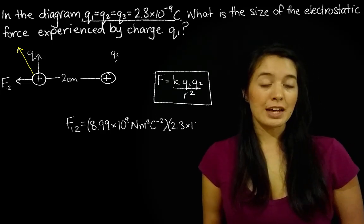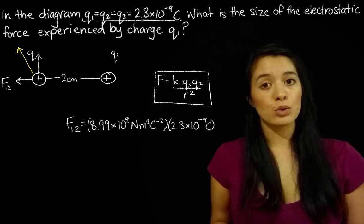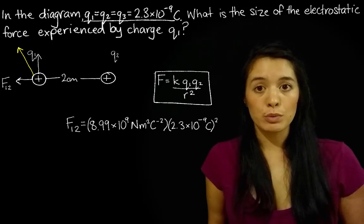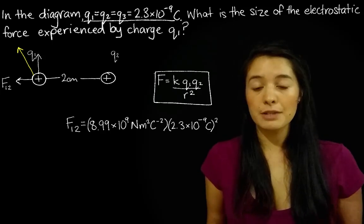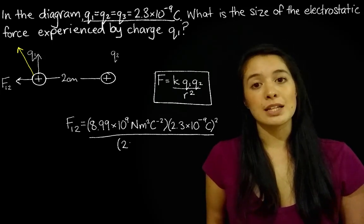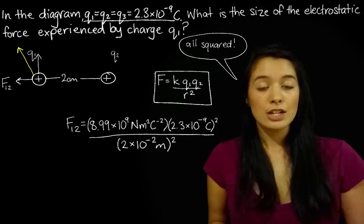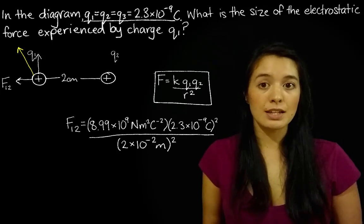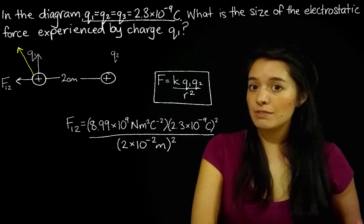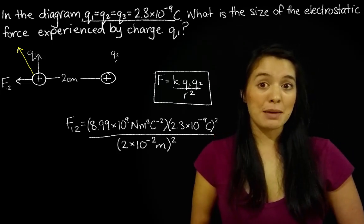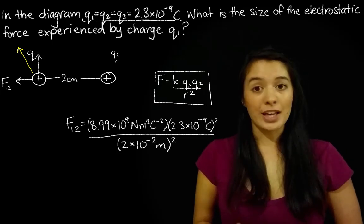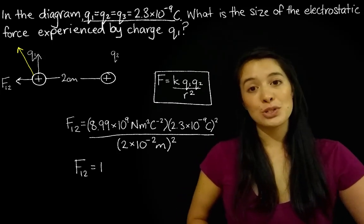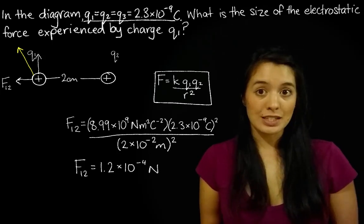Multiply by 2.3 times 10 to the negative 9 coulombs. And we're just going to square that because all the charges are equal. So instead of just multiplying it again, we'll square it over 2 times 10 to the negative 2 meters. So the 10 to the negative 2 is just to keep our units in SI units because the question gives us centimeters and we need to keep it in meters. So if you put all this into your calculator with your correct brackets, you'll get an answer of 1.2 times 10 to the negative 4 newtons.